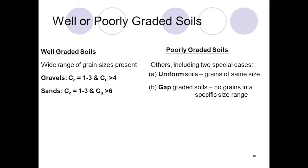Well-graded soils have a wide range of grain sizes with coefficient of curvature Cc equal to 1 to 3. For gravels, Cu is greater than 4; for sands, Cu is greater than 6. Poorly graded soils include uniform soils with grains of the same size, and gap-graded soils with no grains in a specific size range.